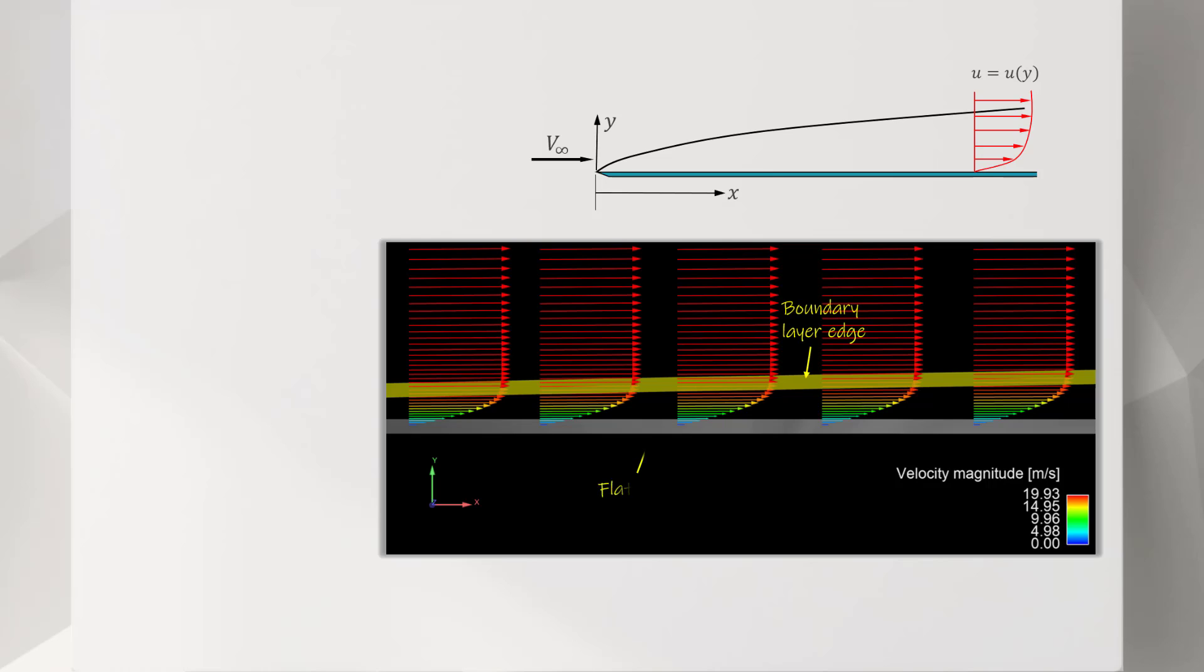The grey surface is the flat plate, while the yellow one represents the boundary layer edge. You can see how thin the boundary layer is compared to the flat plate. Note that shown here is just a tiny little portion of the plate. We can deduce that the direction parallel to the plate has a larger order of magnitude compared to the normal direction. We also see that the velocity parallel to the plate is much larger than the normal velocity.